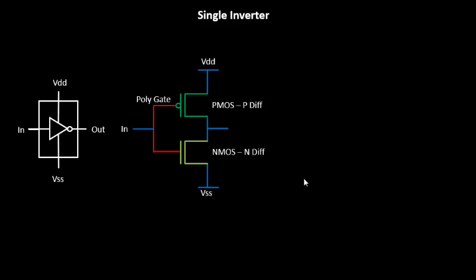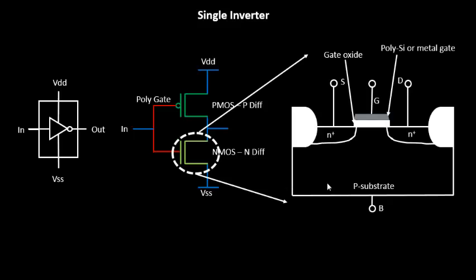When you open up any one of the transistors, you see the cross-sectional view. In this view, you have the gate oxide, the polysilicon or metal gate, the p-type substrate, the N+ diffusion areas for the source and drain terminals.